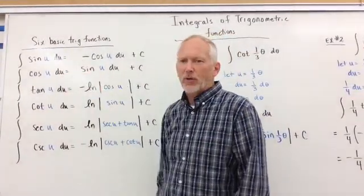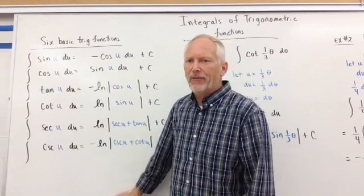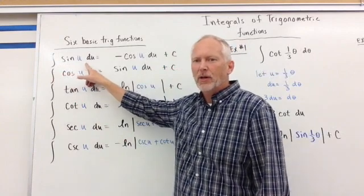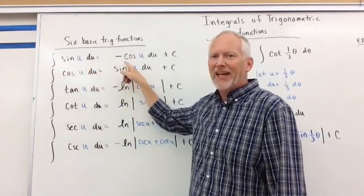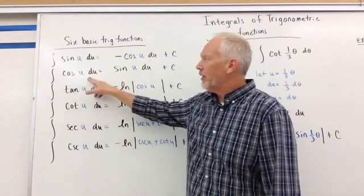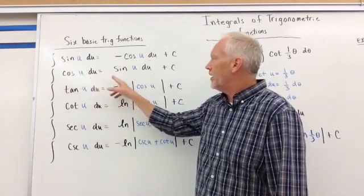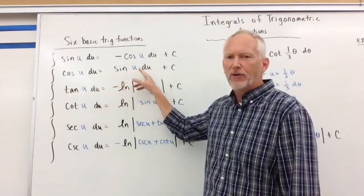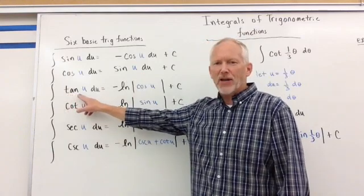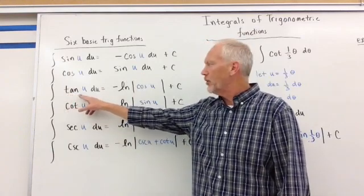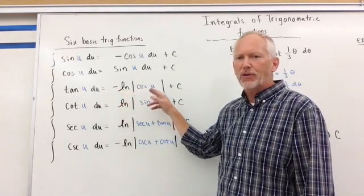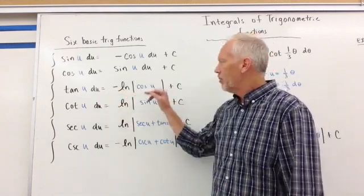So we've got six basic trig functions. We have the antiderivative of sine of U, dU, is equal to negative cosine of U plus C. The antiderivative of cosine of U is positive sine of U plus C. Then we have the antiderivative of tangent of U is equal to the negative ln of cosine of U absolute value plus C.